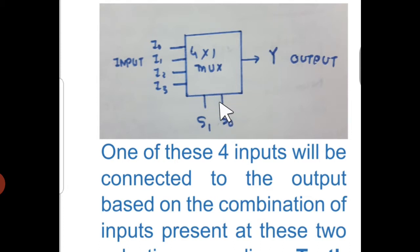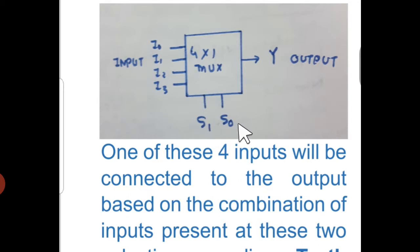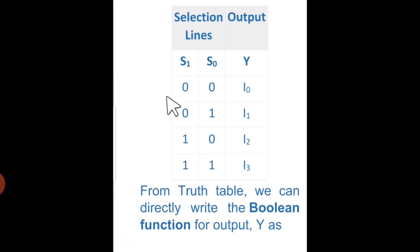What we find here is that two more things are present. These two lines are known as the selection lines, named as S1 and S0. Now we need to understand what is the connection between S1, S0 and I0, I1, I2, and I3. So for that we visit a truth table.